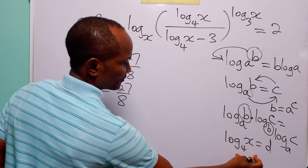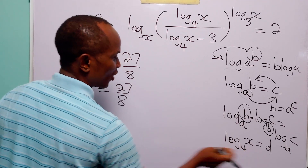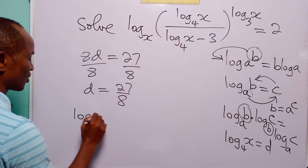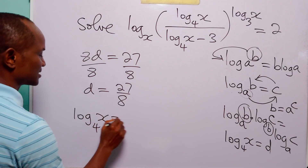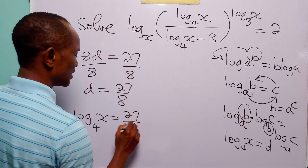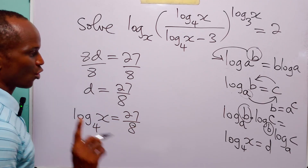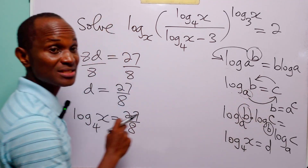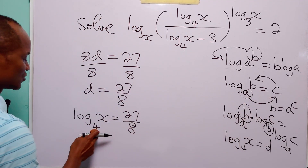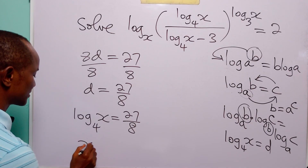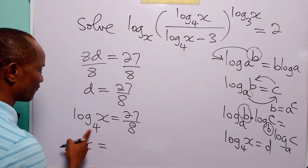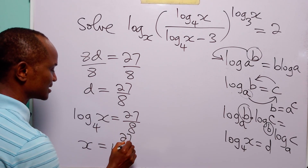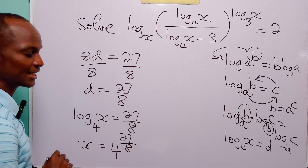Let us not forget that d is log to base 4 of x. So we have that log to base 4 of x is equal to 27 over 8. Going back to the logarithm-to-exponential rule, we have that x is equal to 4 to the power of 27 over 8.